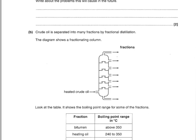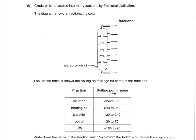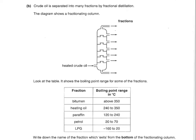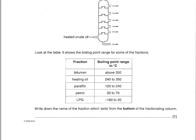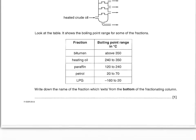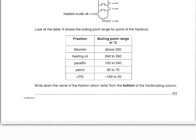Crude oil is separated into many fractions by fractional distillation. The diagram shows a fractionating column. Look at the table showing boiling point ranges for some of the fractions. Write down the name of the fraction which exits from the bottom of the fractionating column. That is bitumen, because it's hot at the bottom and cold at the top, so the one with the highest boiling point comes off at the bottom.